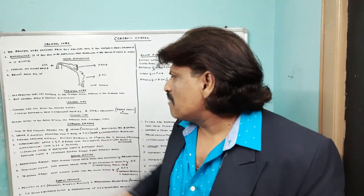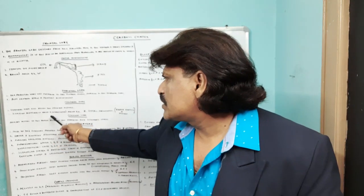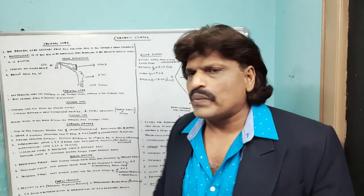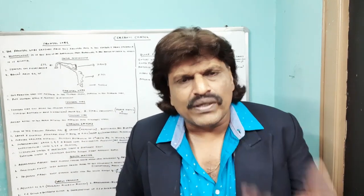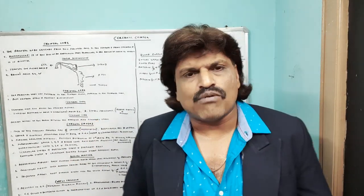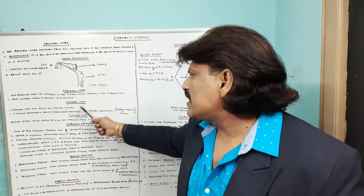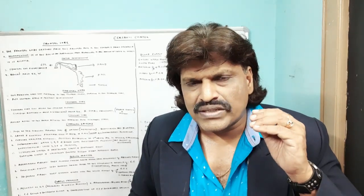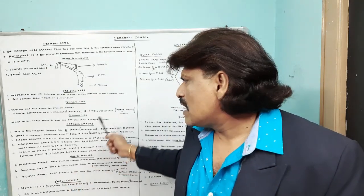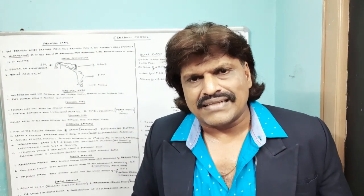Next, the temporal lobe lies below the sylvian fissure. The auditory association area and Wernicke's area is area number 22. Like Broca's area is for fluency of speech, Wernicke's area is responsible for comprehension of speech. If Wernicke's area gets affected, the person cannot understand speech but can speak fluently — it will be nonsensical but fluent speech. Wernicke's area is supplied by the inferior division of the middle cerebral artery. The limbic structures on the medial temporal lobe are primarily concerned with emotion and memory, and one important circuit there is the Papez circuit.